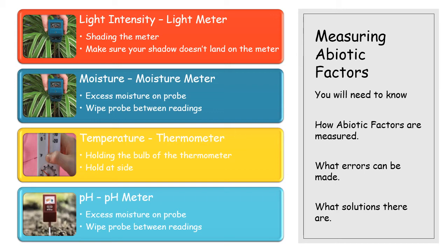For pH you use a pH meter, though you can also use universal indicator or pH paper — you take some soil, put it in a beaker, and get a solution. Just like the moisture meter, you can get excess moisture on the probe, so you need to wipe it between different readings. If you're going from one area to the next, wipe it between, and you'll get an accurate reading of that abiotic factor. You need to know what to use to measure them, what errors can be made, and what solutions there are.